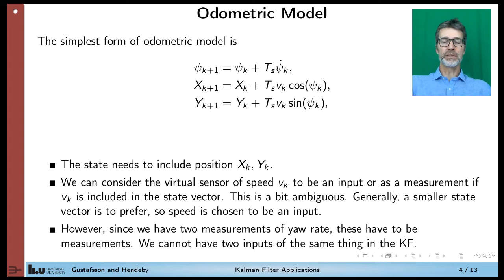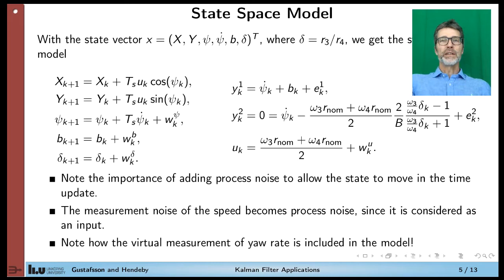Combining this, we have a complete discrete-time state-space model suitable for the extended Kalman filter. The combined state vector includes position, yaw angle, yaw rate, the bias of the gyroscope, and the bias, so to call it, from the wheel radius, which is denoted by the ratio of the unknown wheel radius. So we have five states, we have two measurements, we have one input. We need to assign noise properties to all of them.